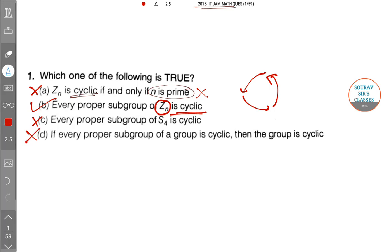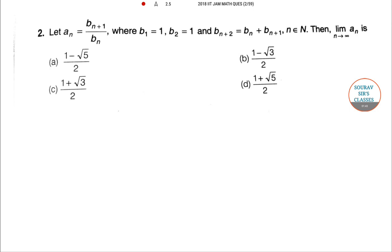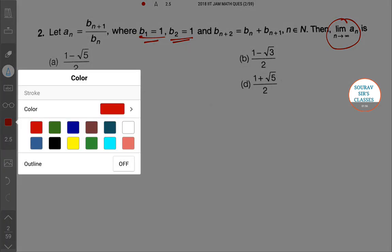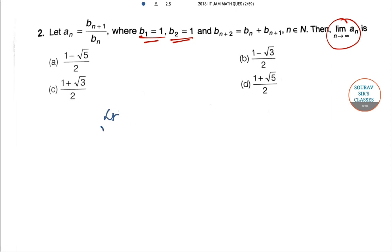Now going to the second question. Let a_n equal b_{n+1}/b_n, where b_1 = 1, b_2 = 1, and b_{n+2} = b_n + b_{n+1}. We have to find limit n tends to infinity a_n. So we have limit n tends to infinity b_{n+1}/b_n equals I. If we write a_{n+1}, this is b_{n+2}/b_{n+1}.